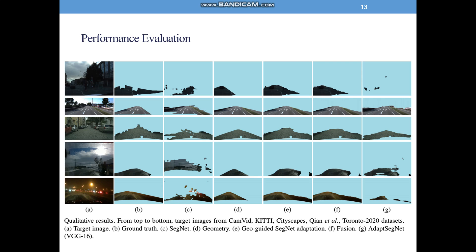More qualitative comparisons are shown on this page. Column A shows the input target image, column B shows the corresponding ground truth, column C shows results of the network trained on the source domain, column D shows results of geometric segmentation, column E shows the softmax results of our method, column F shows the fusion results of our method, and column G shows the results generated from ADAPT.